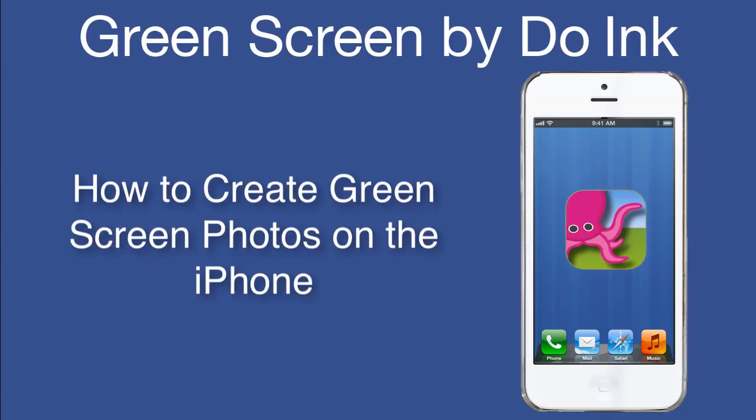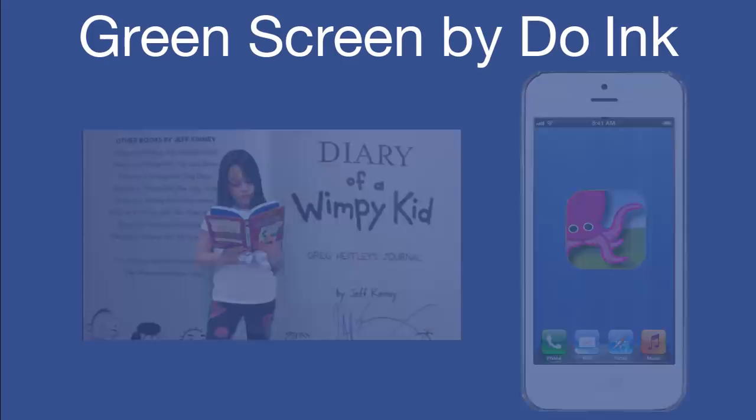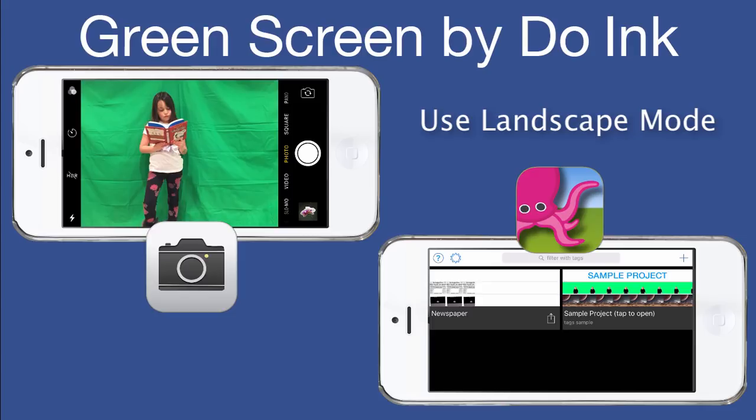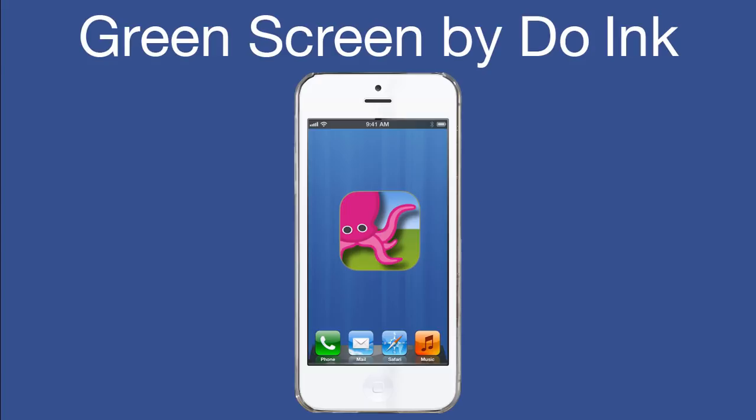Photos can be incredible classroom tools, and in this tutorial we're going to show how to create interesting photos on your iPhone using the Green Screen by Doink app. Start by collecting the background images you want and save them to your camera roll. It's best to use the Green Screen app in landscape mode to make these photos, as this is the aspect ratio supported for output.